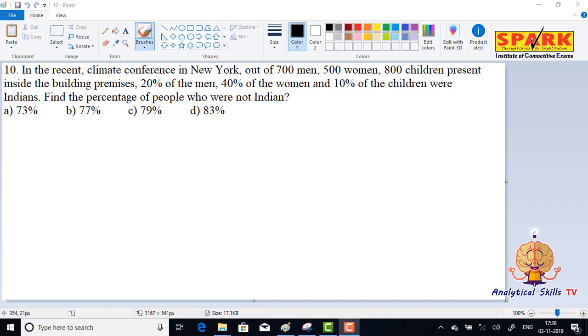In the recent climate conference in New York, out of 700 men, 500 women, and 800 children present inside the building premises, 20 percent of the men, 40 percent of the women, and 10 percent of the children were Indians.